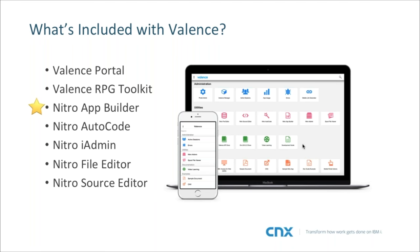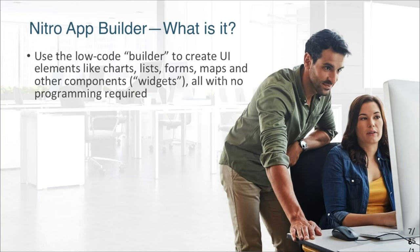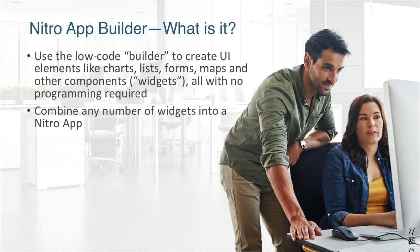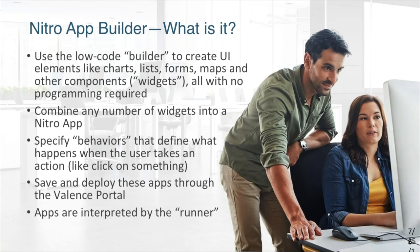Nitro App Builder really is the star of the product. So, what is it? It's basically a low-code builder where you can create data-driven UI elements like charts, lists, and other components we call widgets — with no programming required. You take those widgets and combine them into a completed app, specify behaviors that define what happens when the user takes an action like clicking something, and then deploy those apps through the Valence Portal. Apps at runtime are interpreted by a runner.